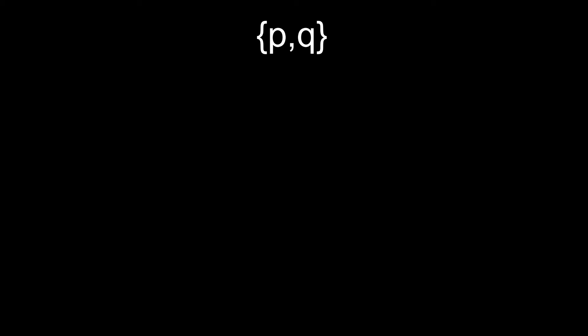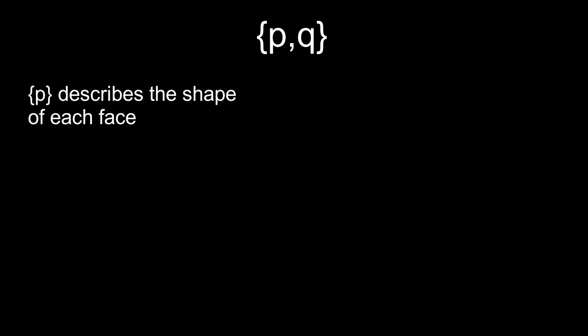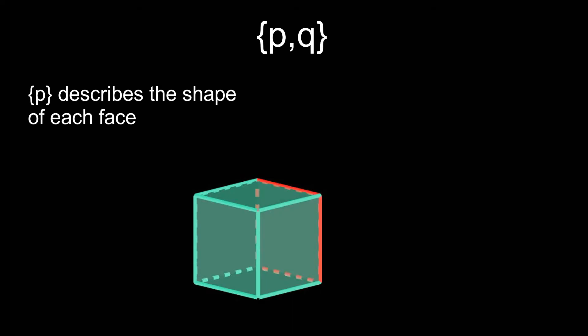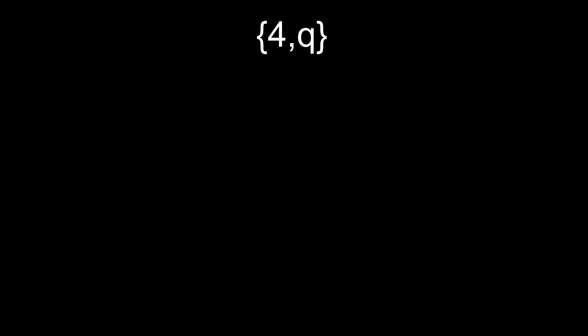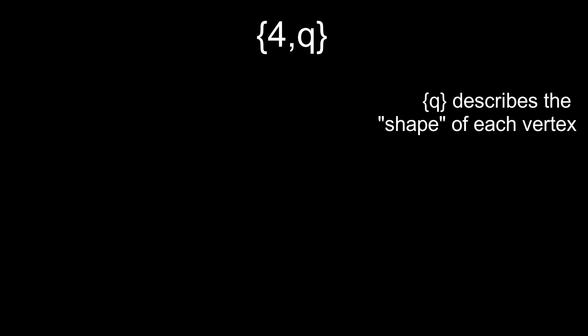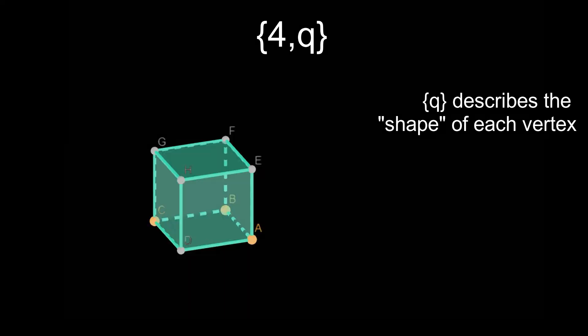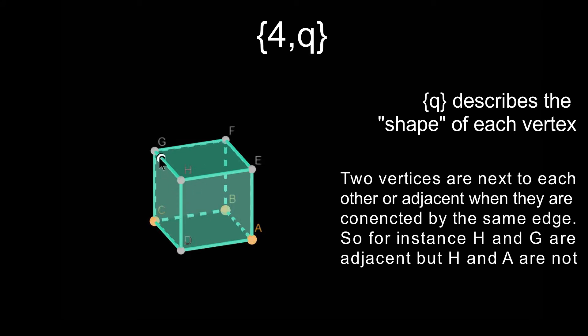For a regular polyhedron, the Schläfli symbol contains two numbers. The first number describes the shape of each face. For instance, a cube is made of squares, so its first number would be 4. The second number is usually described as the number of faces coming together at a vertex, but that's not exactly true. Instead, it's more like the shape of a vertex. Imagine a cube — take a vertex, any vertex. Now take the vertices next to it and connect them together to form a new polygon. That's the shape of a vertex, and in this case it's a triangle.